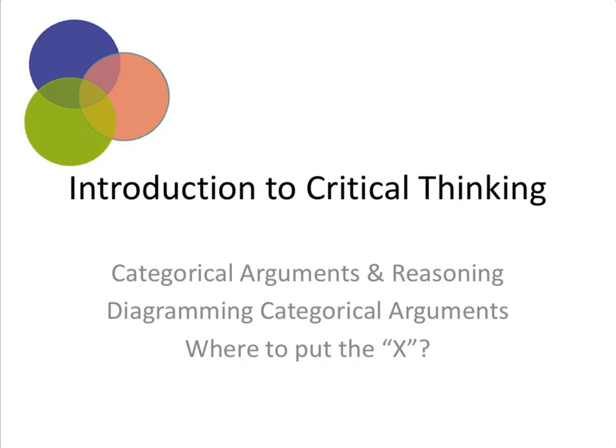In this video on categorical arguments and reasoning, I'll explain where to put the X for those categorical syllogisms using the Venn diagram method. I'll explain why the X sometimes goes on a line and why at other times it doesn't. This problem of where to put the X is probably at the top of the list of problems that go along with using the Venn diagram method. But don't feel bad — it's common and you'll get it. It's important to do because if we're evaluating categorical arguments based on our diagrams, then our diagrams better be accurate.